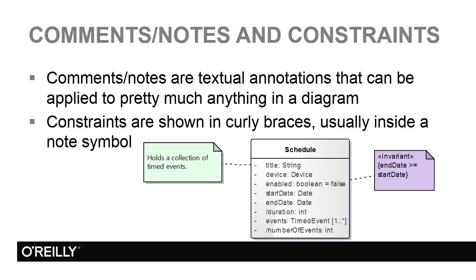Constraints are often shown in a note symbol. Constraints define an aspect of a model element or elements that must be true. They're often expressed in object constraint language, which is another object management group standard, and are shown in curly brackets or braces. This diagram shows a note on the left and a constraint on the right, both applying to the class schedule.